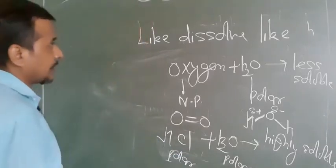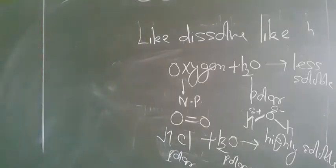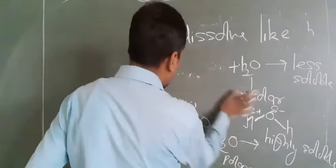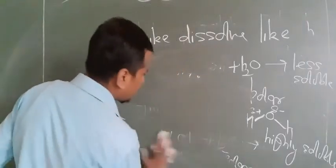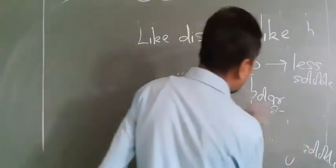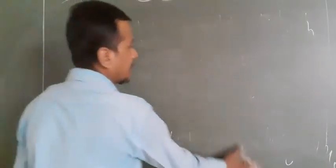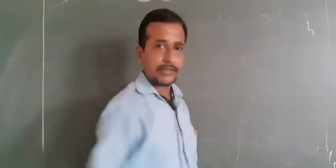So by this way, we can say 'like dissolves like.' NaCl dissolves in water because NaCl is an ionic compound and water is highly polar. That's why NaCl dissolves in water.